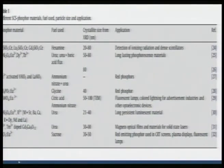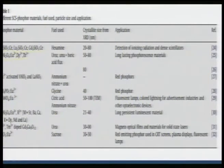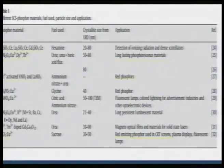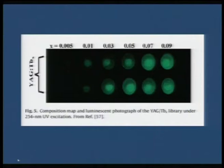A host of phosphors can be prepared using combustion synthesis. With varying terbium doping concentration in yttrium aluminum garnet (YAG), the luminescence of the resulting powder changes — all YAG powders were activated at 254 nm excitation. This demonstrates the versatility of combustion synthesis for phosphor preparation.